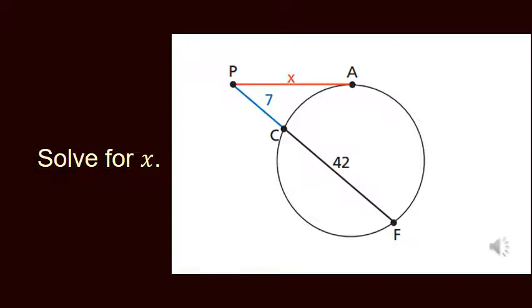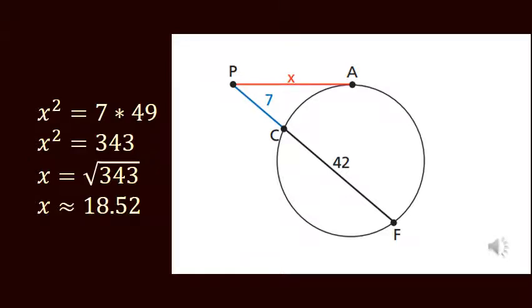So here's an example of how you might use it. We have x for our tangent and then the segments 7 and 42 set up in the secant part. And that means I'd have x squared equals 7 times 49, 7 plus 42. That gives me x squared equals 343. So my answer must be the square root of 343, and it turns out that's a little more than 18 and a half, and that would be my answer.